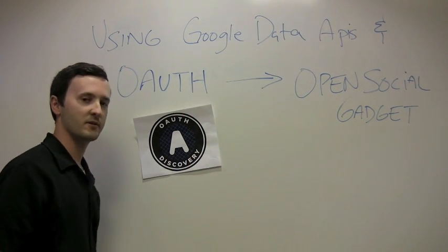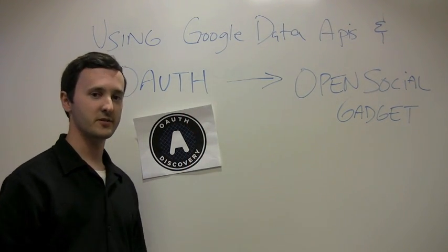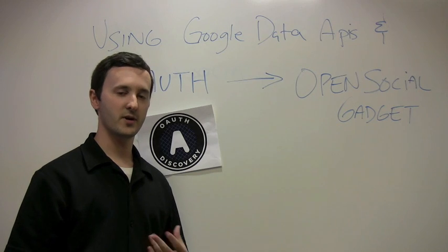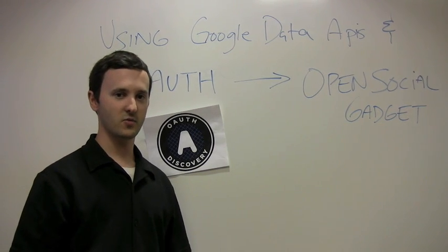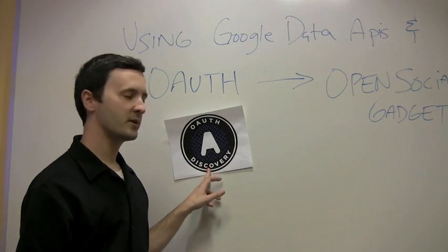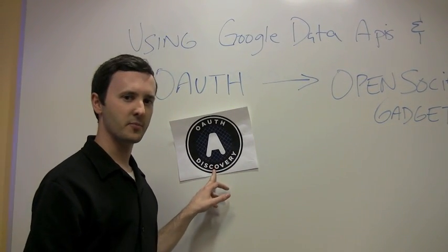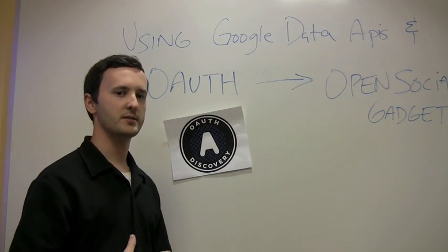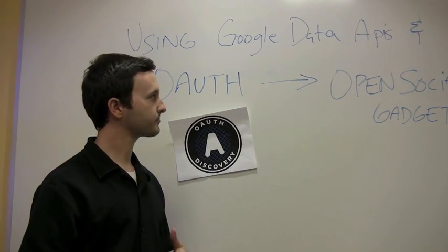For those who aren't familiar, OAuth is an open standard for authorizing data access on the web, sharing users' private data. We'll be going a little bit about the DSLs app, but mainly focusing on how that incorporates into a gadget.